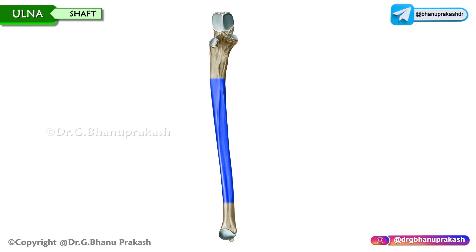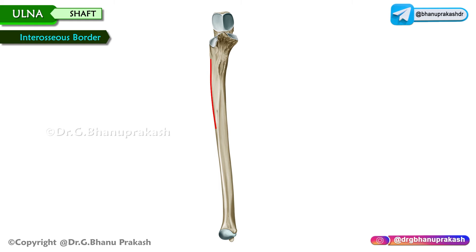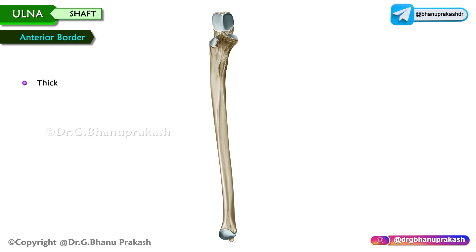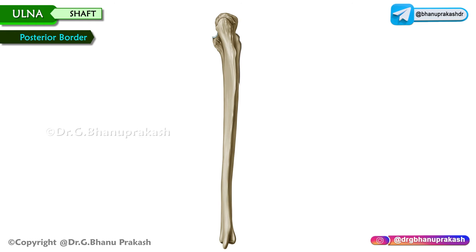The shaft is triangular in cross section in the upper part and rounded in the lower one fourth. It has three borders and three surfaces. The interosseous border starts at the lower part of the supinator crest, is sharp and well defined, and gives attachment to the interosseous membrane. The anterior border is thick and blunt, beginning above and medial to the ulnar tuberosity and extending to the base of the styloid process. The posterior border starts on the posterior side of the olecranon and fades away below; it lies subcutaneously.